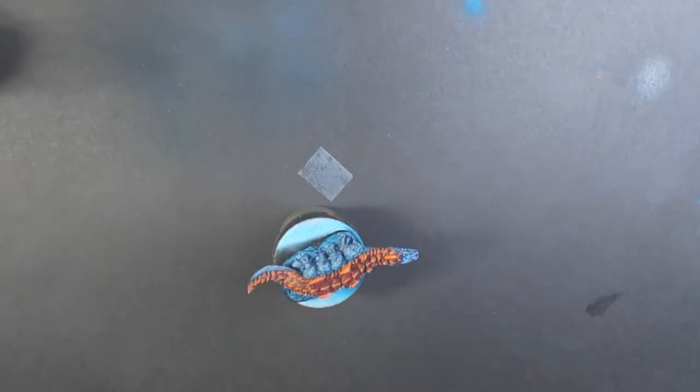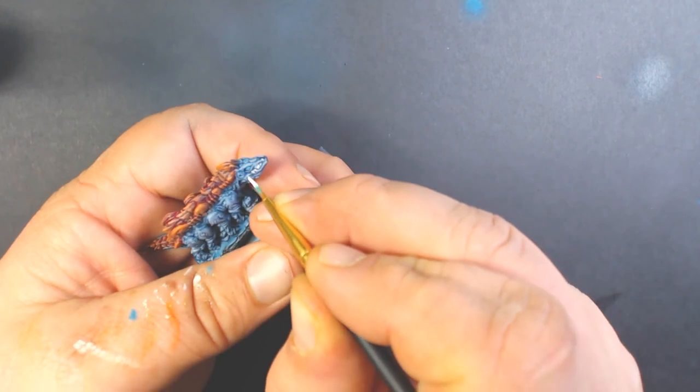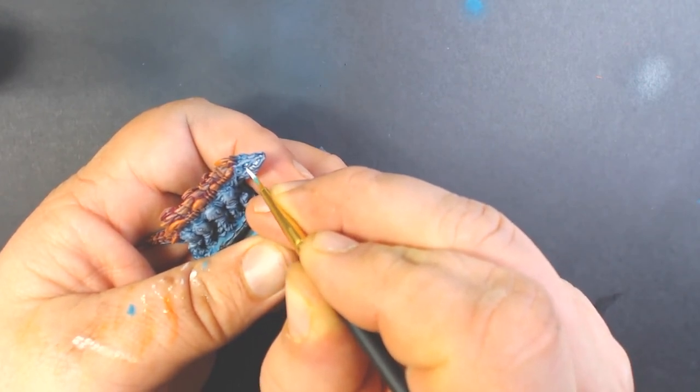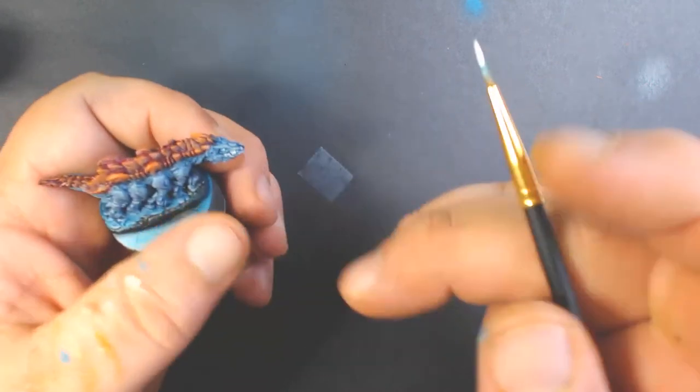And then finally some P3 Morrow White, and we're going to put a dot of that in the center, slightly to the right of center, so it gives us a nice glow effect.